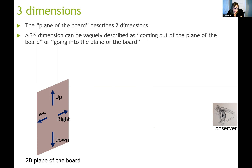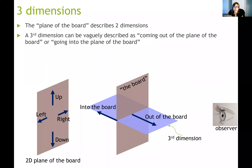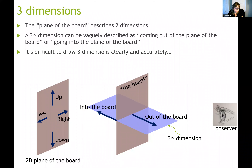In 3D, a third dimension comes out of or goes into the board. This dimension also has two senses: out of the board and into the board. Those define a line with two directions. It is really hard to draw these things, but we will describe this third dimension in terms of into the board or out of the board, and you do need to be able to describe those.